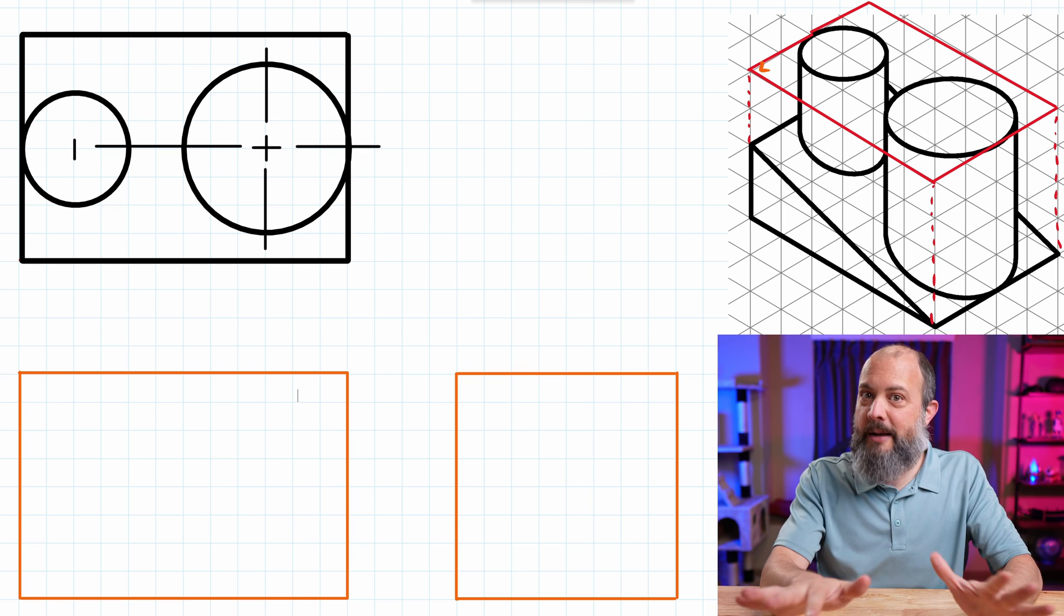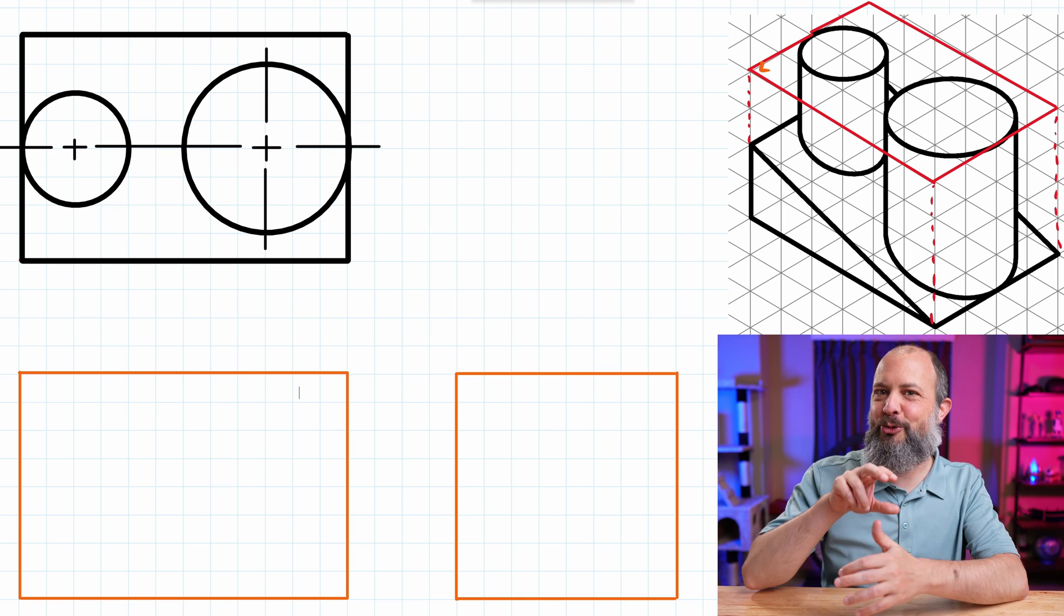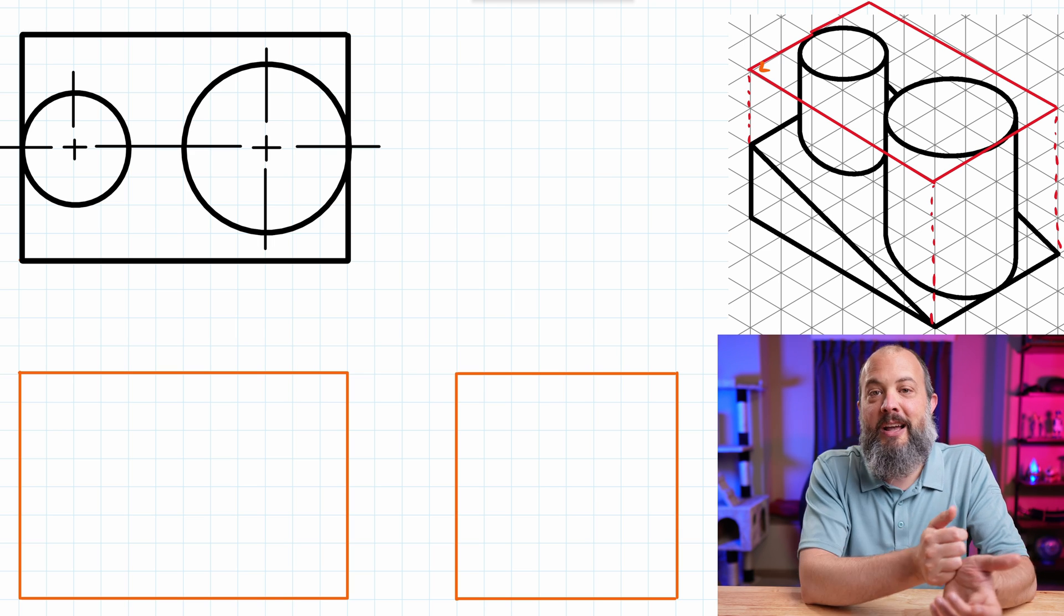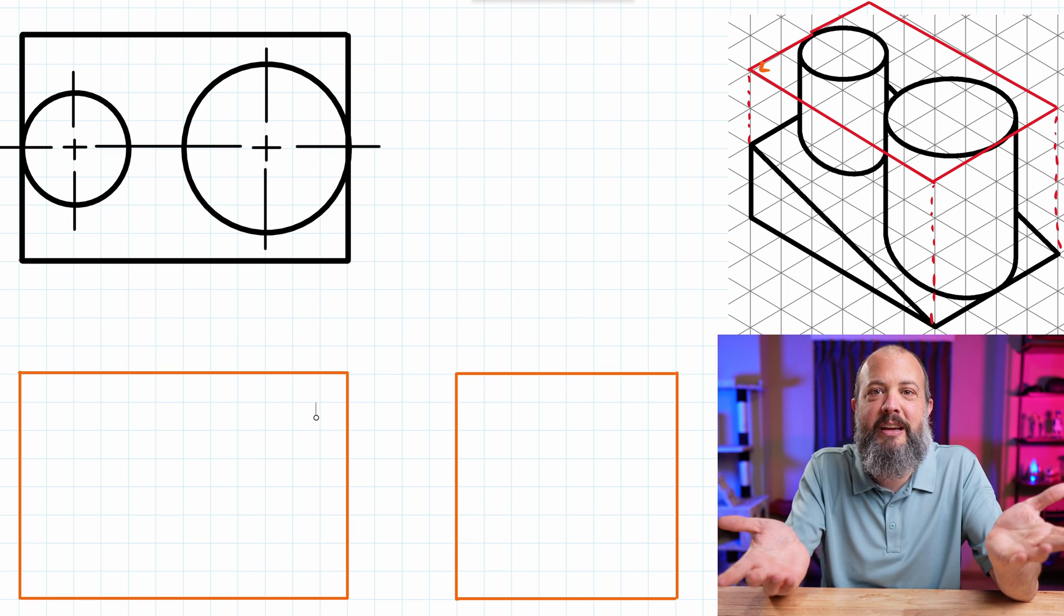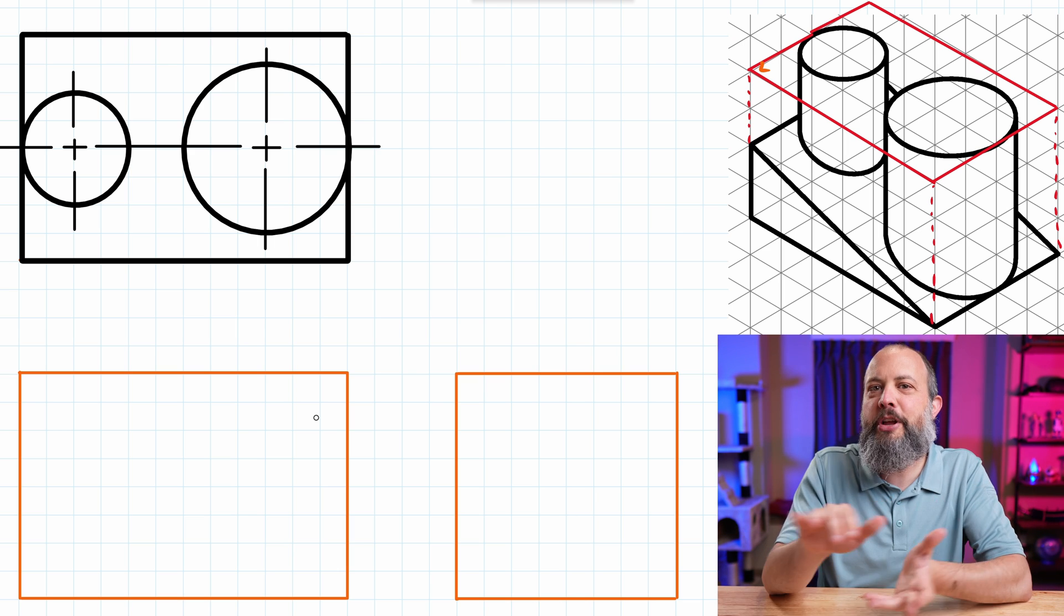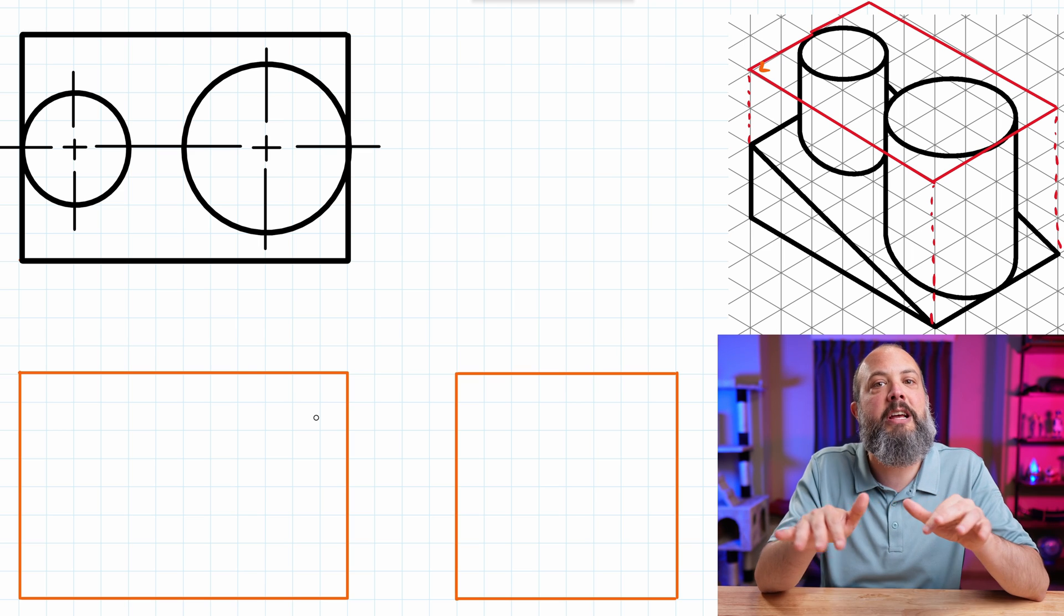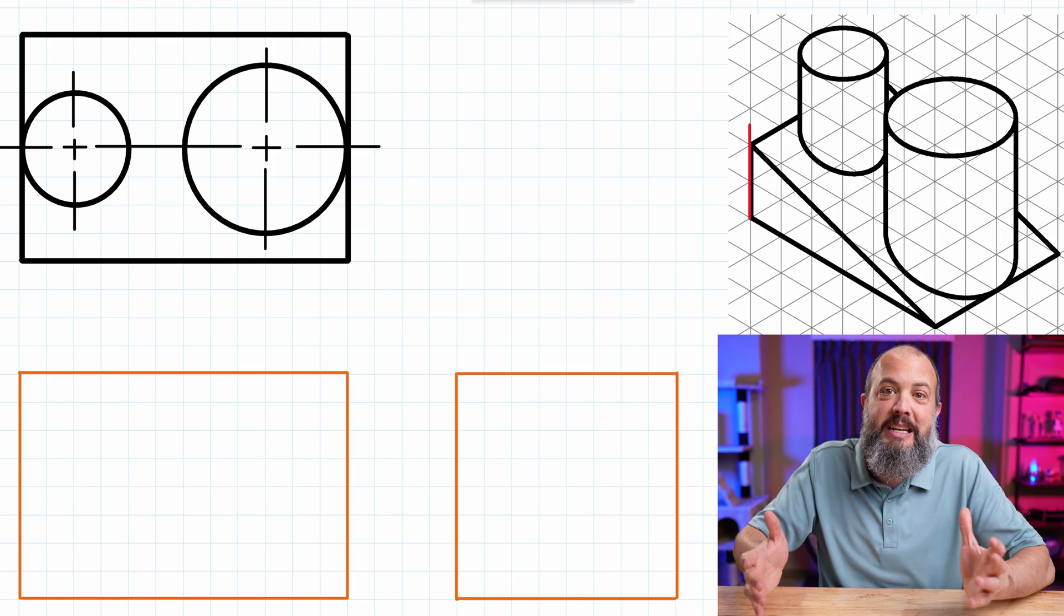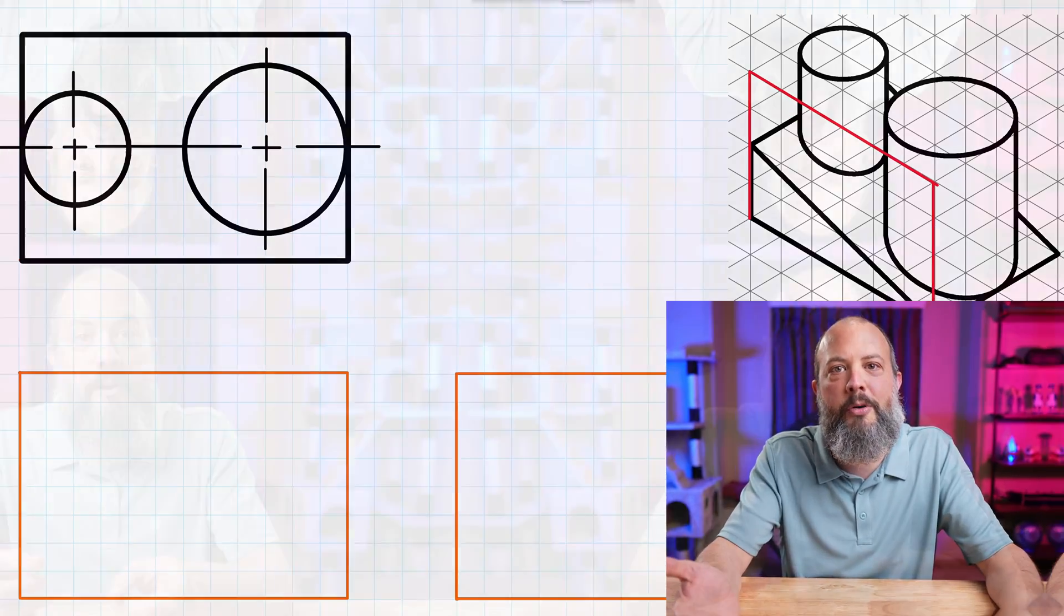One thing you are allowed to do that's optional is to actually connect the two center lines. So in this case, the right side of the small circle and the left side of the large circle, I can actually connect those center lines to each other instead of leaving a gap in between them. And doing this helps make it very clear to the reader that they're exactly horizontal from each other, that their centers do perfectly line up. Also, if I were dimensioning this drawing, I would only need to add one dimension since they're both now connected to each other.